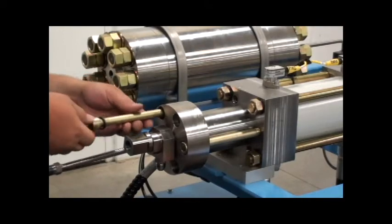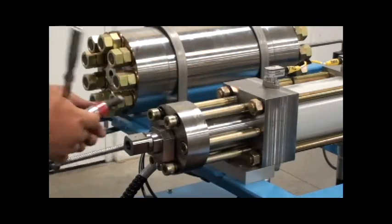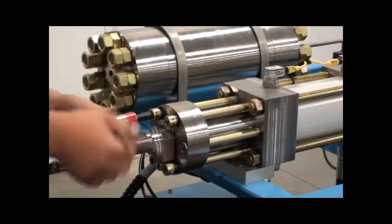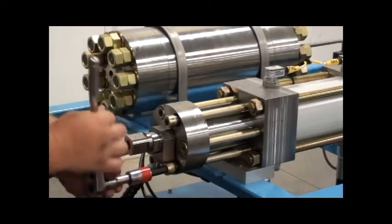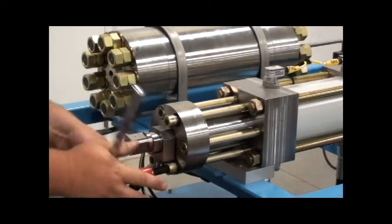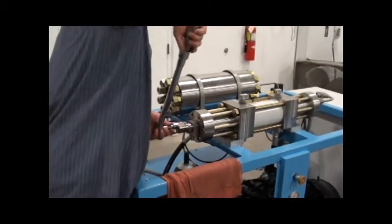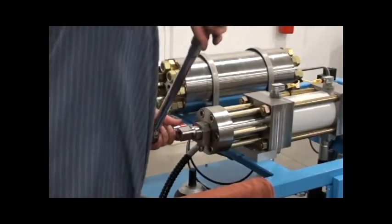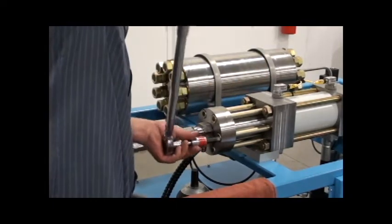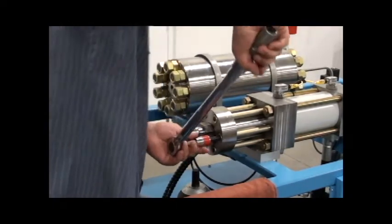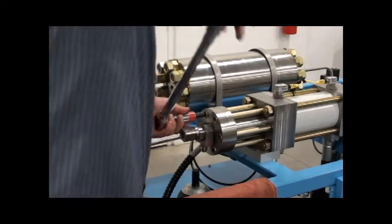Then reinsert the remaining cap screws and snug them down to roughly 25 foot pounds. Use your torque wrench and start at 50 foot pounds for the first torque. Go in a pattern that is straight across from each other and clockwise all the way around.